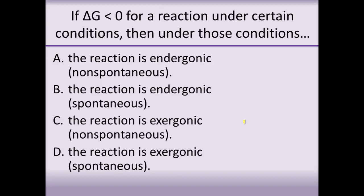If delta G is negative — less than zero — for a reaction under certain conditions, then under those conditions the reaction is going to be exergonic, which is a fancy word for spontaneous. Exergonic means it decreases the amount of free energy.